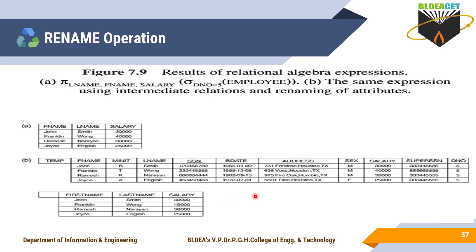These are the three different unary operations. First, SELECT operation (σ) to select tuples. Next, PROJECT operation (π) to select columns. And RENAME (ρ) to rename a relation or its attributes with a new name.